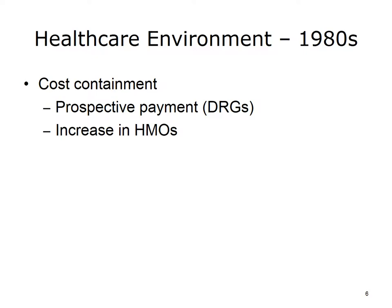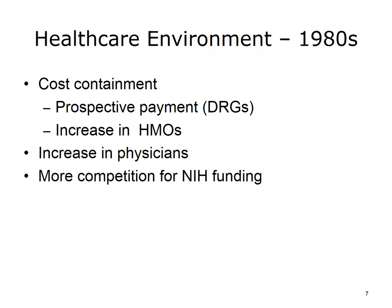HMOs were seen as systems that might control some of these costs. In HMOs, the patient enrolls and pays a fixed upfront fee, and the HMO provides all services a patient needs — with that model, there was no revenue to be gained from doing more or unnecessary procedures. The fear of a physician shortage had led to an increasing number of physicians and academic physicians doing clinical research, driven by the value placed on science. There was more competition for NIH funding, and reflecting the general movements for empowerment within the larger society, we began to see more patient empowerment at this time.